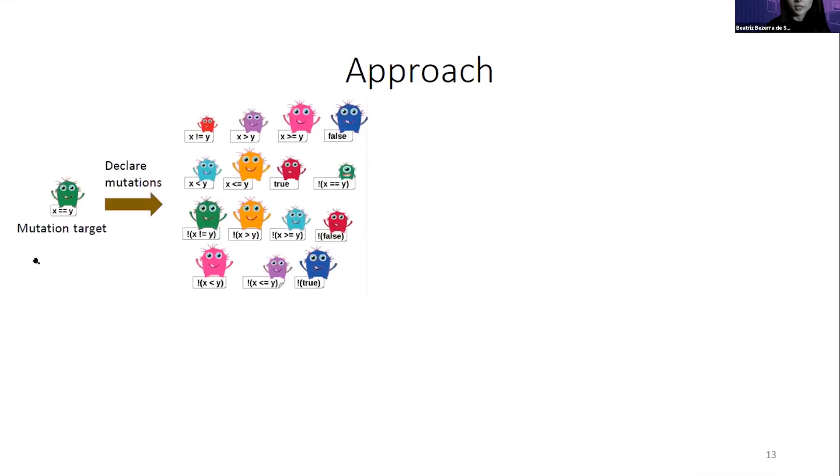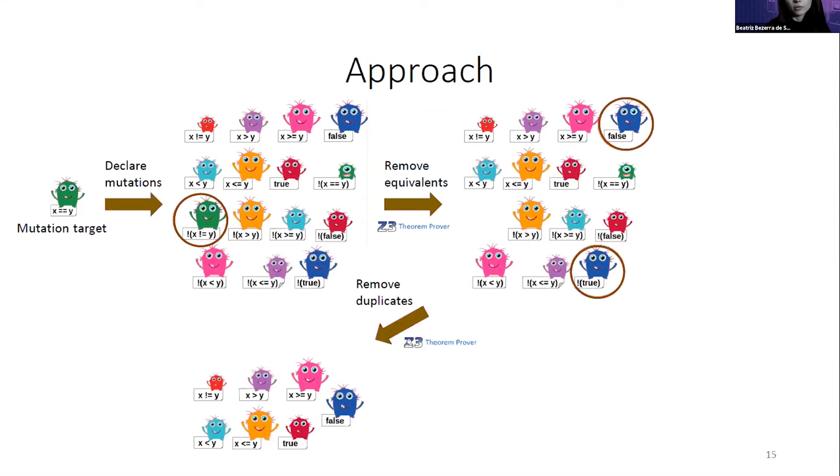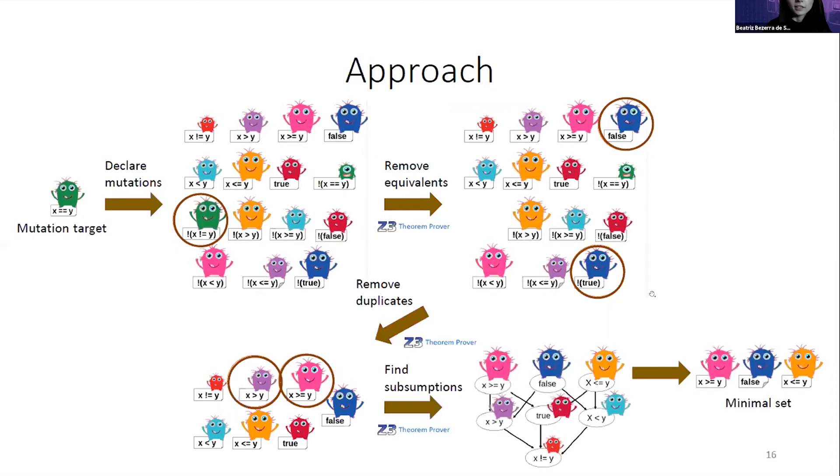We propose a technique to find redundant mutations based on theorem proving with Z3. For each mutation target, we declare the possible mutations for that target. Then we remove equivalent mutants by proving whether each mutation is semantically equivalent to the target. We remove duplicate mutations by proving whether each mutation is semantically equivalent to other mutations. Then we find subsumption relations by proving whether each mutation subsumes the other ones. What we have in the end is a minimal set of mutations that we should apply for the received target.